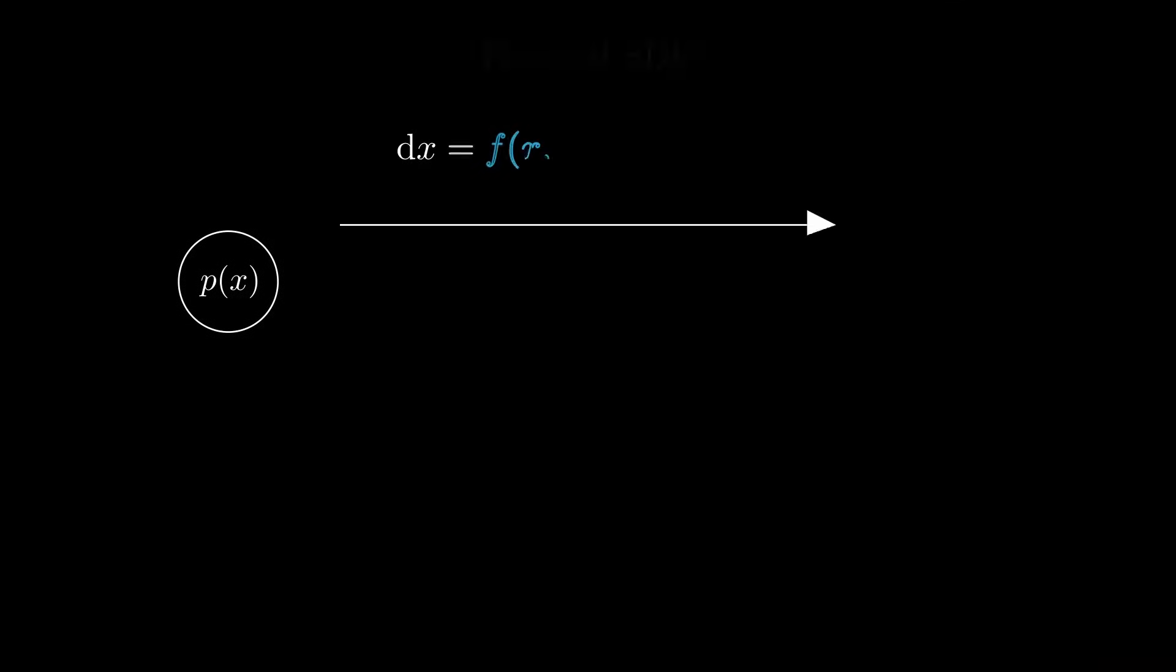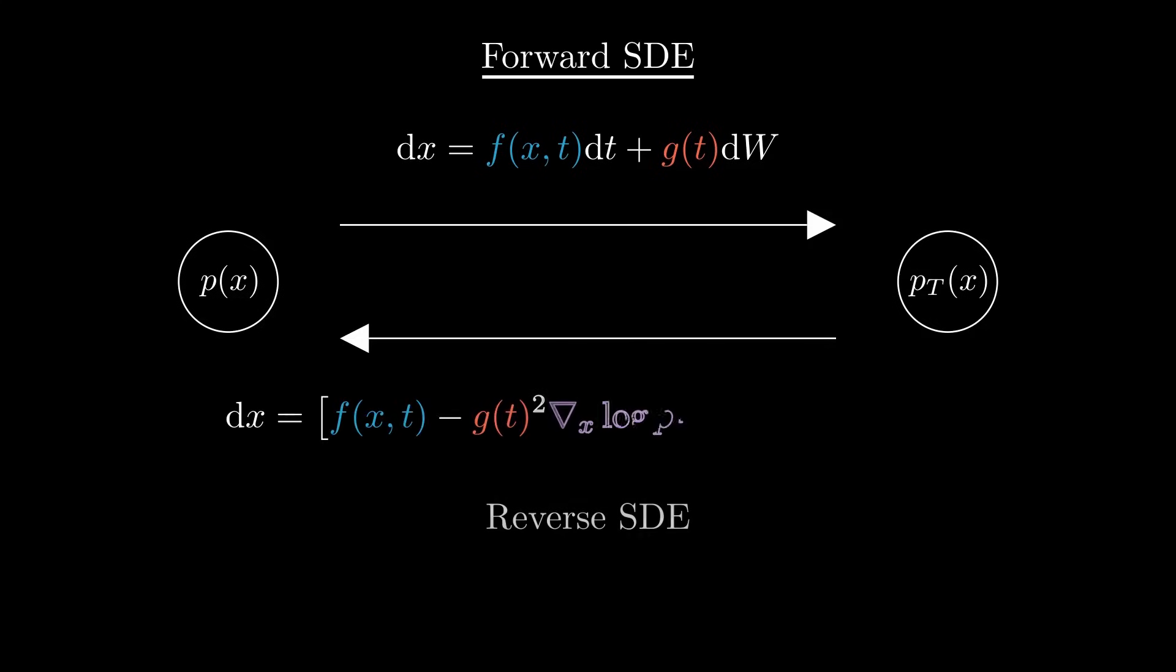Luckily, yes, we can reverse this kind of Ito equation. Previous work from the 80s on stochastic differential equations tells us that under mild regularity conditions, any forward SDE has a corresponding reverse time SDE. This result was first formally derived by Anderson in 1982, and 40 years later it's now at the heart of diffusion models.